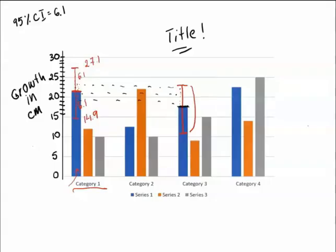So if the error bar, for example, here, notice there is no overlapment, and I'm comparing here to the category one, then it means the difference between this mean and this mean is going to be statistically significant.